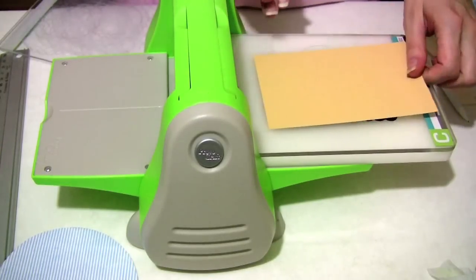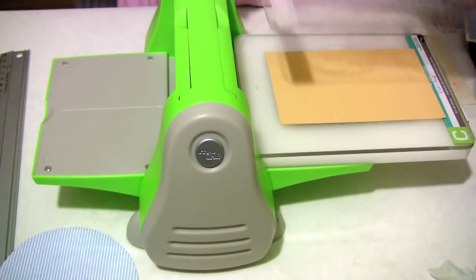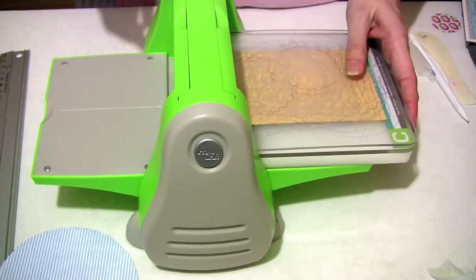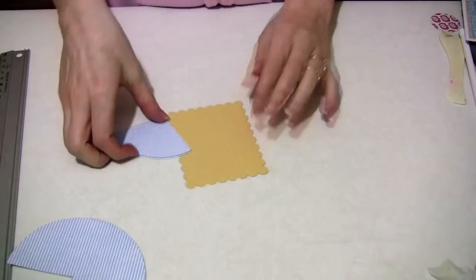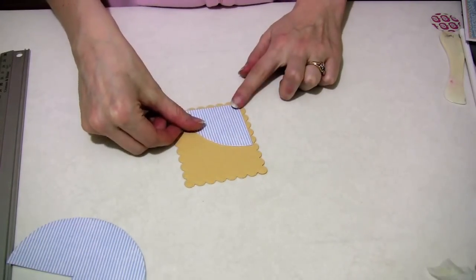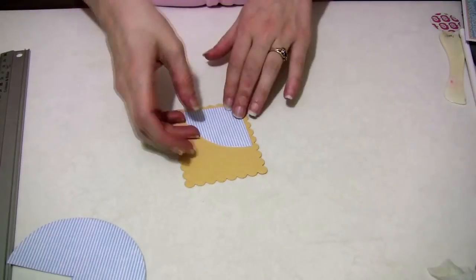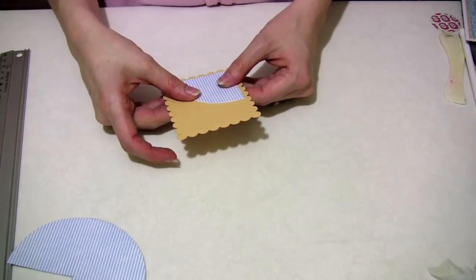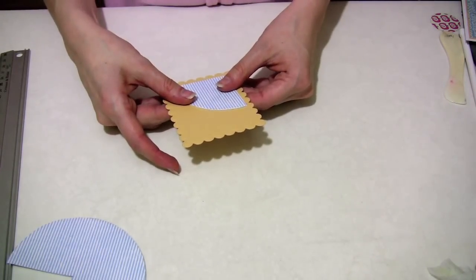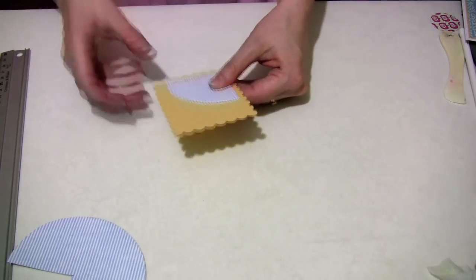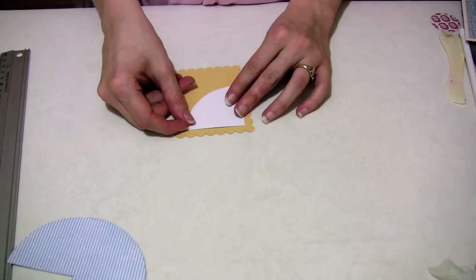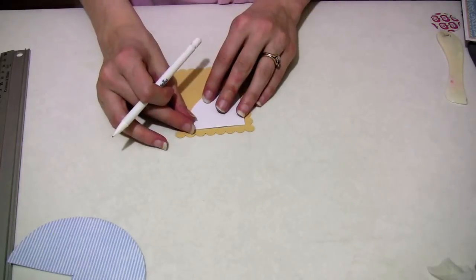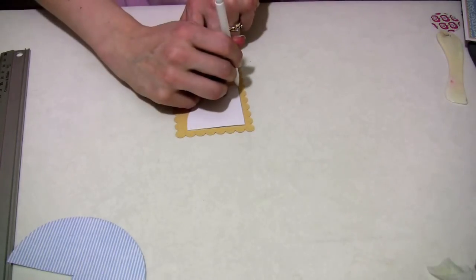I'm going to use a scalloped rectangle Nestability die and I'm running this through the Cuttlebug with some yellow cardstock. Using this scrap piece of paper, this scrap quadrant of the circle as a template, I'll be able to make sure that I can measure a perfect scallop and a perfect trim for the pram. Let's turn this over. I'm using my pencil just to trace around the piece of card, the quadrant like this.